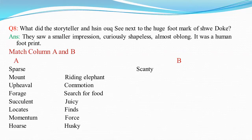Now match the column. Column A: Sparse — the answer is scanty. Number 2: Mount — answer is riding elephant. Number 3: Upheaval — the answer is commotion. Then Forage — the answer is search for food. And then Succulent — the answer is juicy. Locates — answer is finds. Momentum — its meaning is force. And then Hoarse — its meaning is husky.